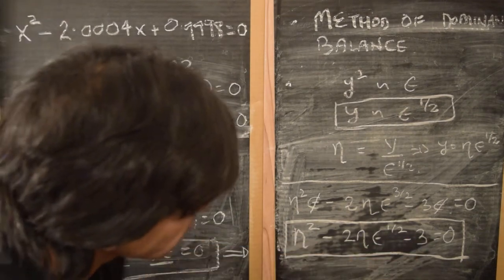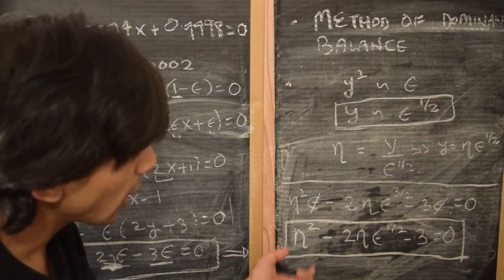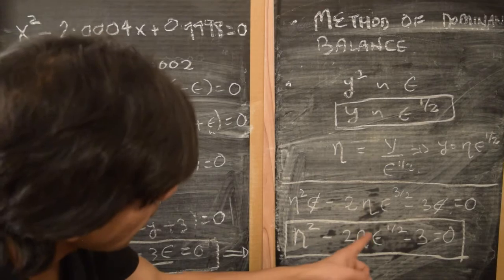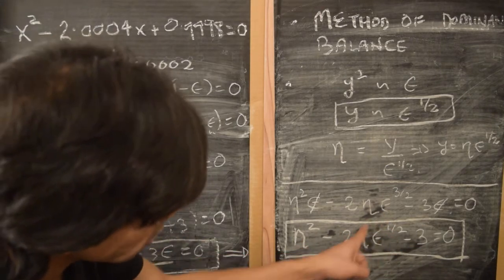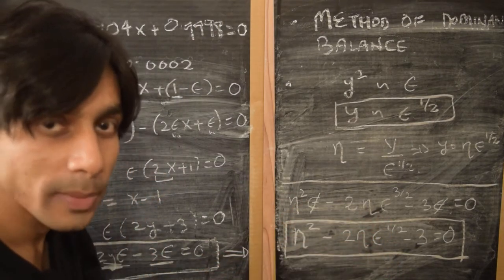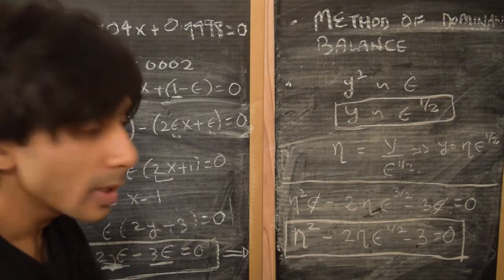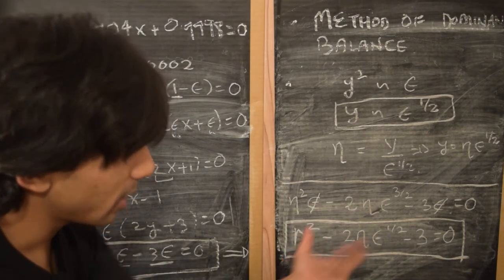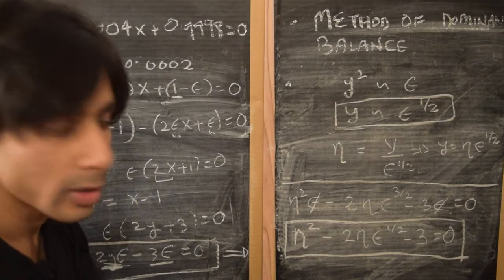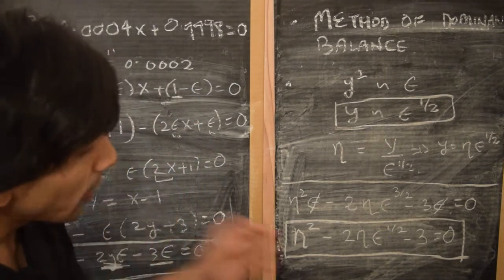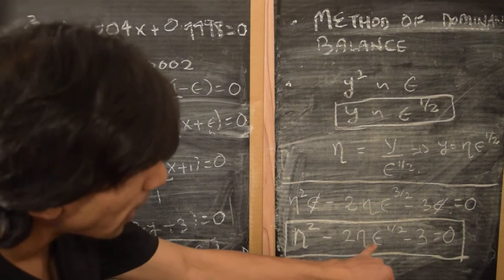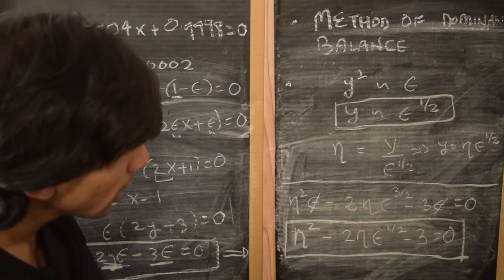Now these two terms — η² and −3 — are the dominant terms we identified before. In terms of the variable η they are order one, whereas the term −2η·ε^(1/2) also has a factor of ε^(1/2), making it the small term — the term which is insignificant in comparison to the other two at leading order. This tells us we should look for a series solution for η in powers of ε^(1/2).